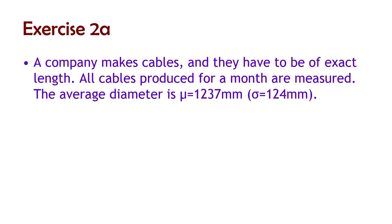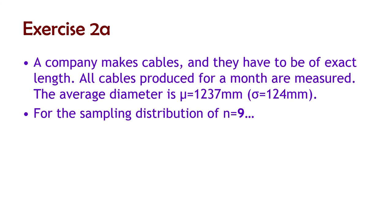Another set of exercises. A company makes cables, and they're very concerned with quality control. All cables produced for a month — that's a population, so we use mu and sigma. The mean diameter is 12.37 millimeters and the standard deviation is 124 millimeters — actually, let's say it's length. For the sampling distribution of n equals 9, find the mean of that sampling distribution and the standard error.